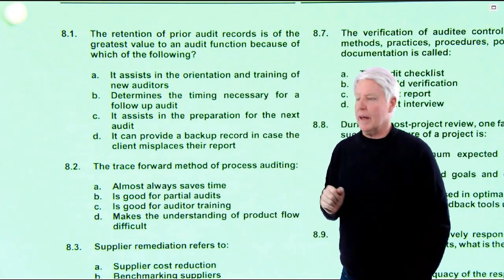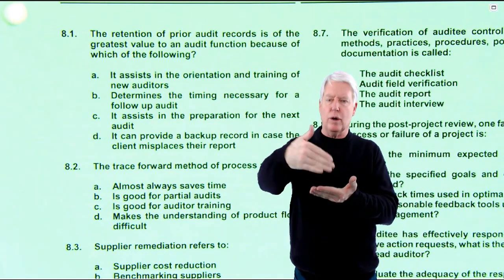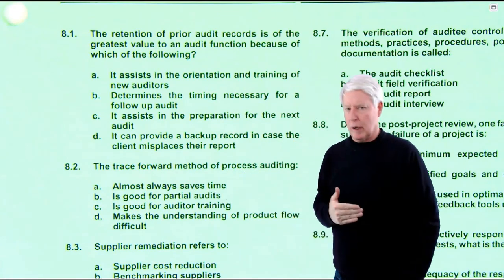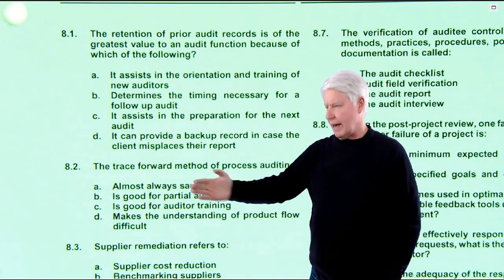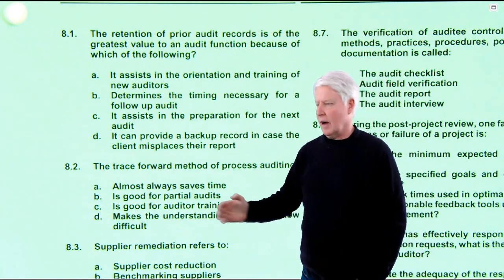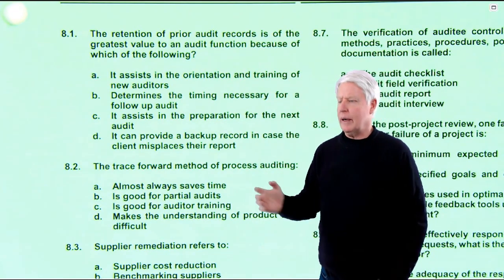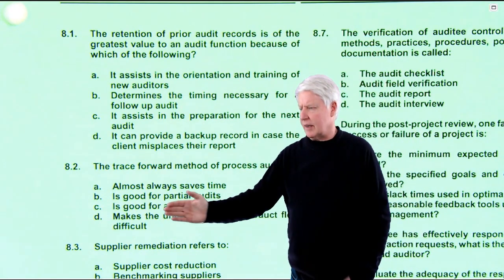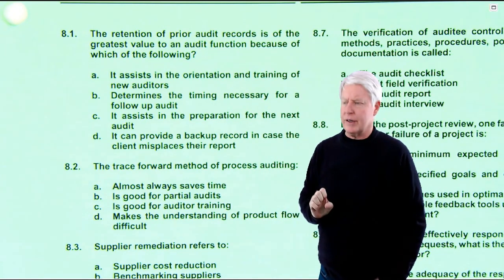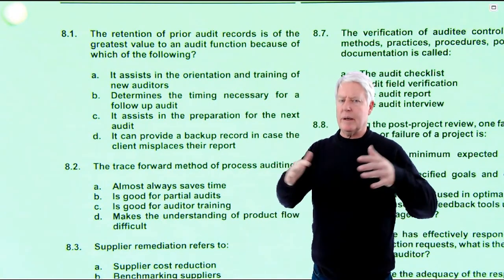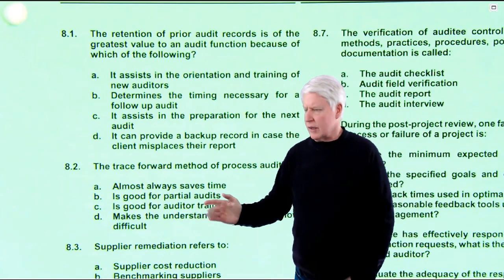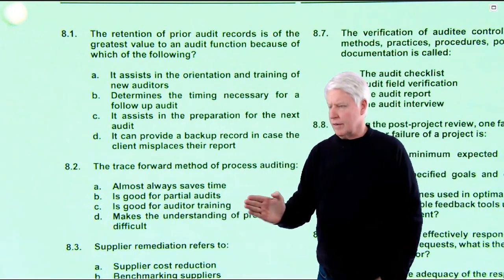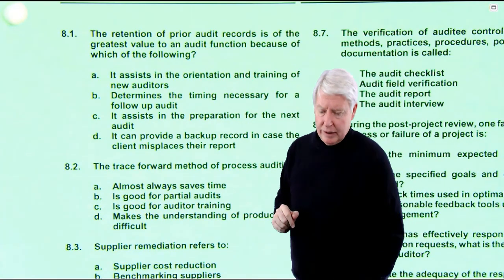Question 8.2: The trace forward method of process auditing — that's where you have a flow chart and follow it as you audit, going forward with the flow. Trace backwards is when you go back against the flow; both have advantages and disadvantages. Almost always saves time — not necessarily, we don't have enough information. It is good for partial audits — maybe, but not the best answer. It's good for auditor training — definitely, because the flow makes sense and jumping around makes things more confusing. It makes product flow difficult — no, it actually makes it easier. 8.2 is C, and that is correct.